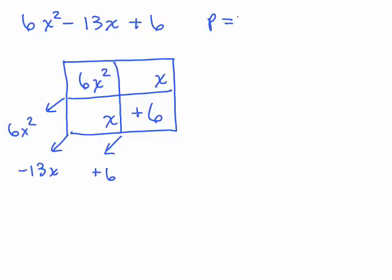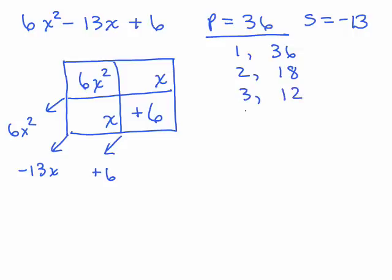So we want the product to be the 6 times 6. Now you could look in here or first and last term here. Product is 36, sum is negative 13. Okay, numbers that have a product of 36, 1 and 36, 2 and 18, 3 and 12, 4 and 9, 6 and 6.